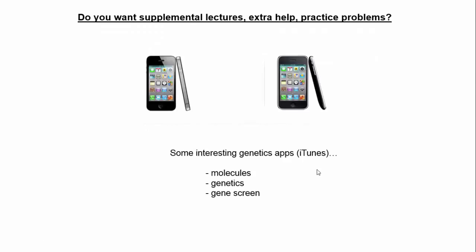If you're looking for extra lectures, supplemental help, extra practice problems, or elaborations on things we've talked about in lecture and lab, I'd recommend these three apps from the iTunes store. They're all free. 'Molecules' lets you throw up any molecule in a three-dimensional ball-and-stick design and rotate it around. 'Genetics' helps you with crosses and Punnett squares. Then 'GeneScreen' is a nice app where you can put in any type of genetic abnormality and see the method of inheritance — autosomal recessive, autosomal dominant, sex-linked, etc. — and learn about symptoms and possible treatments.